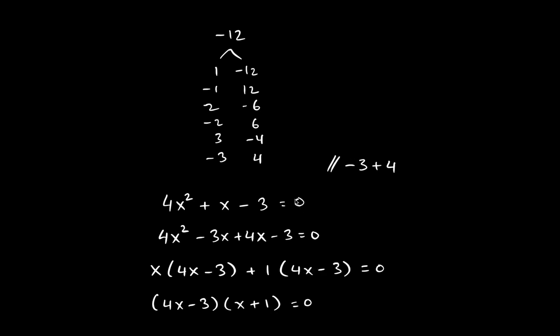One important note: the '= 0' keeps coming down through every step. We cannot just get rid of it. Frequently students write only the left-hand side and stop writing the right-hand side — that's incorrect. This is an equation. If you remove the '= 0', you turn it into an expression. We cannot change the type of problem midstream — if we start with an equation, we must end with an equation.